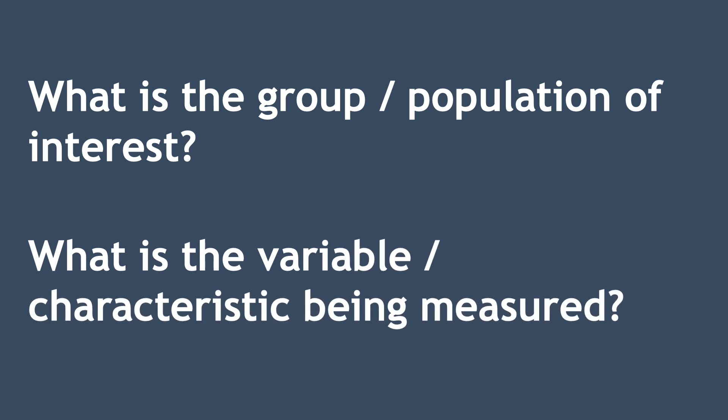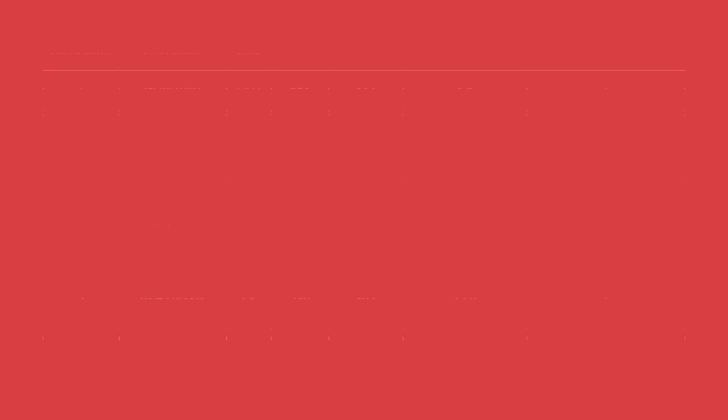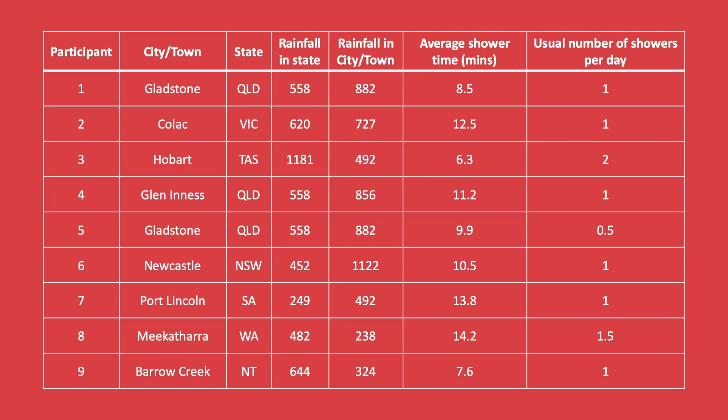A variable is a measurable characteristic that can differ for members of the group. If you think of tables of raw data, each row might represent a member of your population, and each column would be one of the variables.